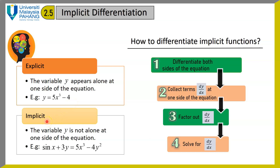An implicit function means the variable y is not alone on one side of the equation. For example, sin x plus 3y equals 5x cubed minus 4y squared. You can see here you have y on both sides of the equation.